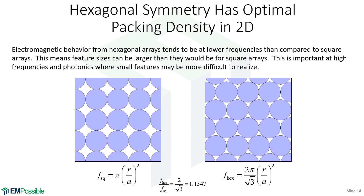In planar electromagnetics, hexagonal lattices are almost always preferred. Looking at a square array on the left and a hexagonal array on the right — both with the same lattice spacing A — the hexagonal array has less empty space; the packing density is much higher. So if you were a farmer wanting to plant the most number of trees on a property, you'd want a hexagonal array. You'd get about 15% more trees on your property than you would using a square array.